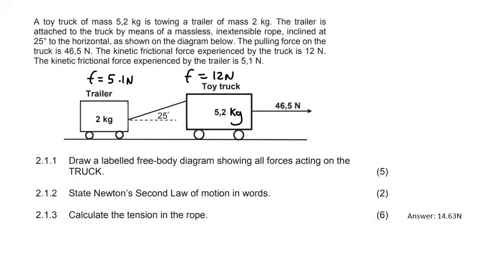Now the first question says draw a labeled free body diagram showing all the forces acting on the truck. So the truck has an applied force, it would have friction, it would have a normal force, it would have gravity, and then we have some type of tension force going down at an angle. We can just draw it like that and that would be your tension force. There's the five different forces and that's typically why we would get five marks.